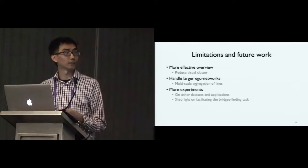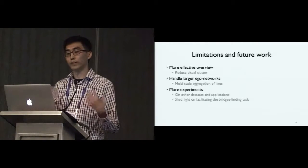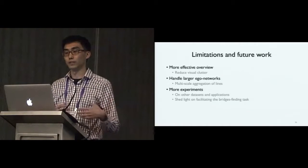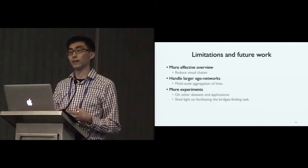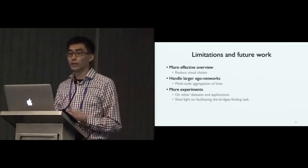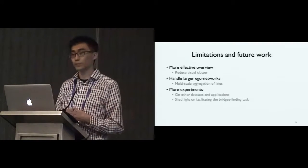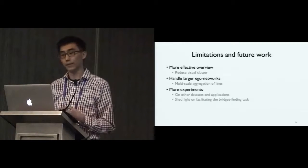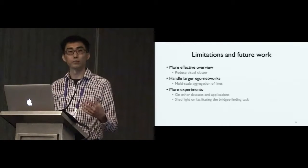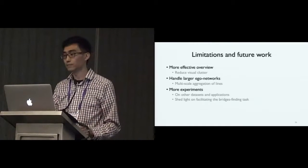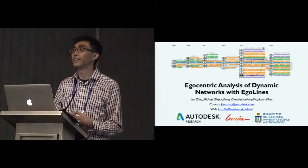In the future, we'd like to address some limitations of the current EgoLines system. We want a more effective overview, reduce visual clutter, and handle larger ego networks by incorporating multi-scale aggregation techniques such as expanding or collapsing lines. We'd also like to do experiments on other datasets and applications, and most importantly, figure out how to make the bridge-finding tasks more effective with EgoLines. Thanks to all my co-authors, and thank you for your attention — I'll take any questions.